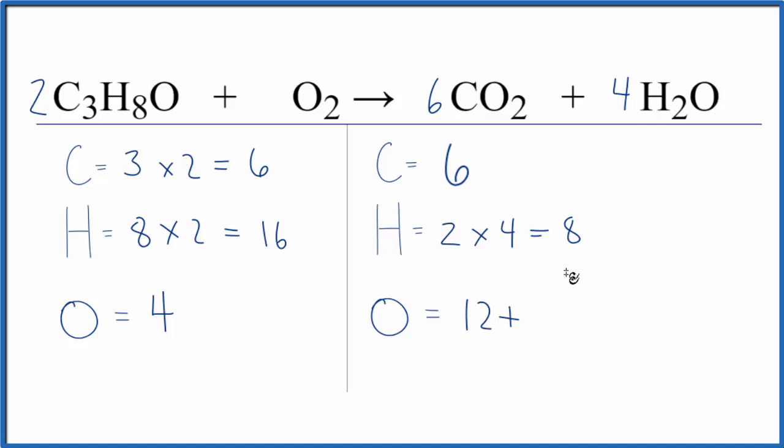Let's fix the hydrogens. We can change the four here, we'll need to change that to an eight. Now update our hydrogens, we have eight times two is sixteen, so now we have sixteen hydrogen atoms. We need to update the oxygens: six times two is twelve plus eight times one is eight, that equals twenty.